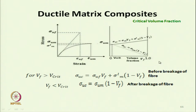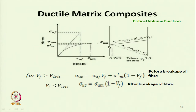The plot shows ultimate stress of composite versus volume fraction of fibre, with Vf ranging from 0 to 1 on the x-axis. When volume fraction of fibre is 0, the ultimate stress of the composite equals sigma dash m — that is the starting point on the solid line.